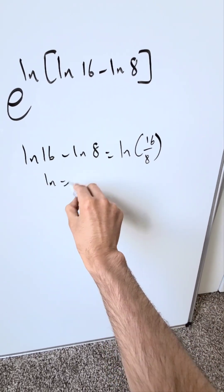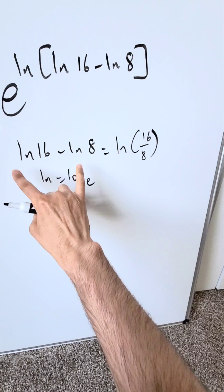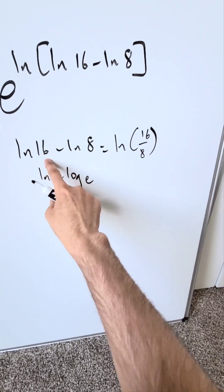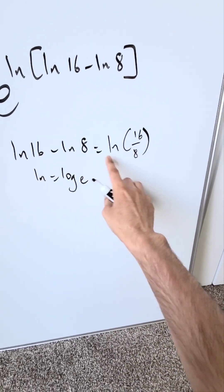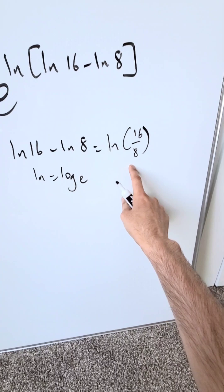Why do you do this? Because natural log is equal to log base e. These are independent logs with the same base. Hence, you can use this property, bring the difference into a quotient.